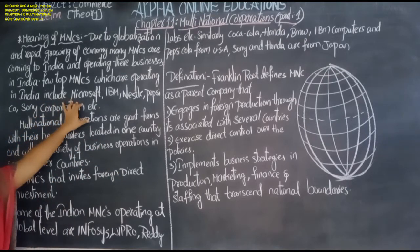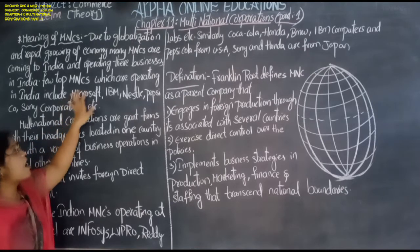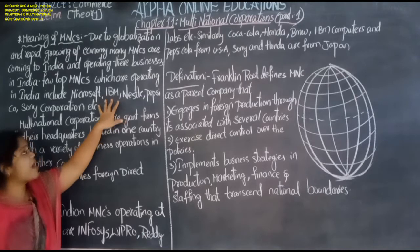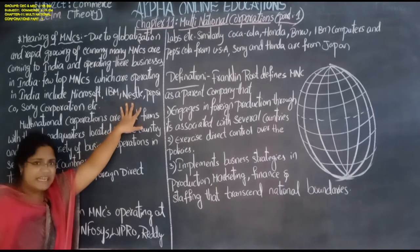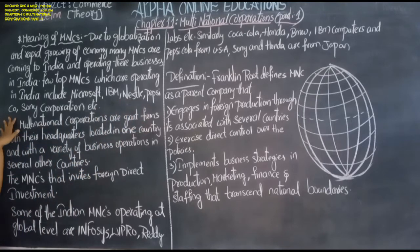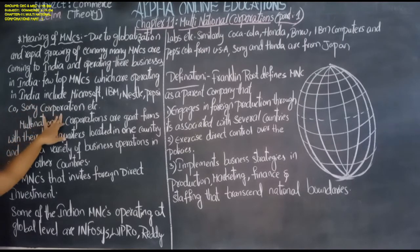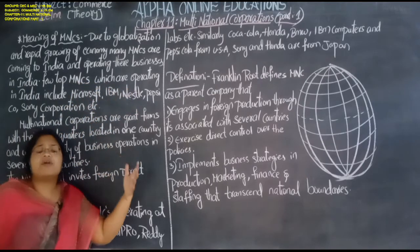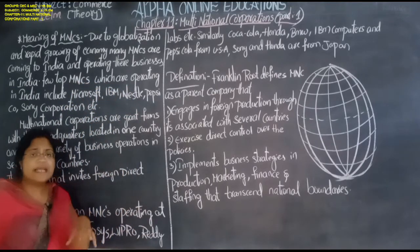Microsoft is not an Indian company, but it has a branch in India. IBM is not an Indian company, but it has a branch in India. Nestle is not an Indian company, but it has a branch in India. Pepsi is also a foreign company. Sony Corporation is also a foreign company. These are all foreign companies, but they are carrying on their activities in India as well.